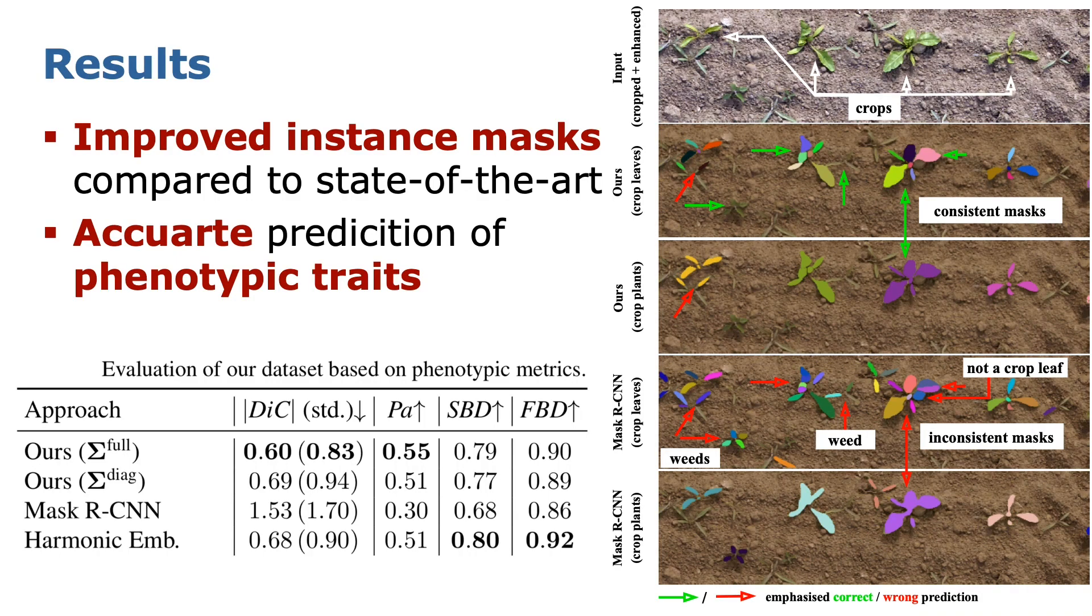We evaluate our approach on images of a sugar beet field and show that our approach achieves more accurate instance masks in comparison to state-of-the-art methods. In addition, we derive common phenotypic traits such as the total leaf count per plant and show that our approach is superior to competing methods.